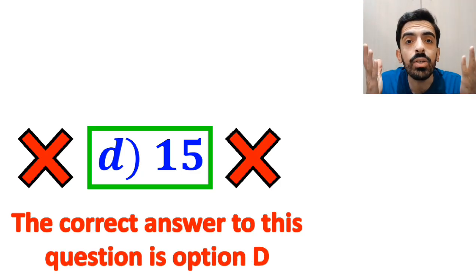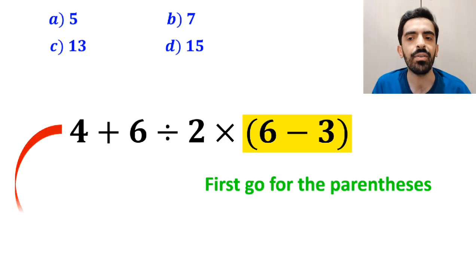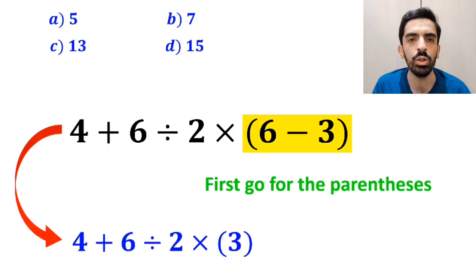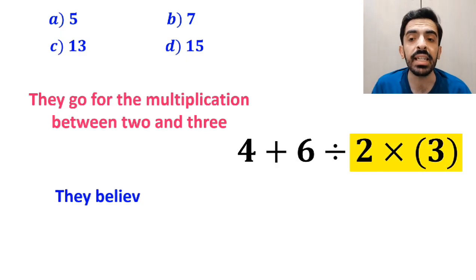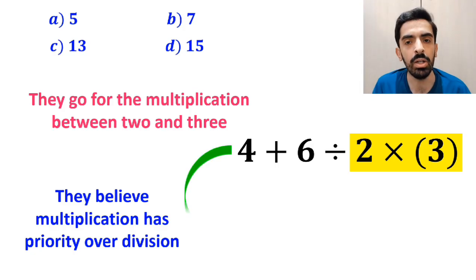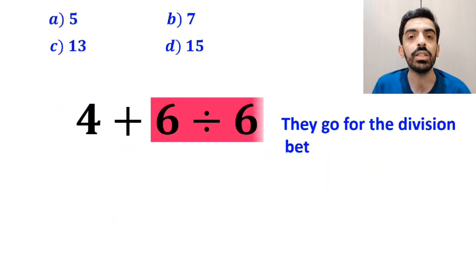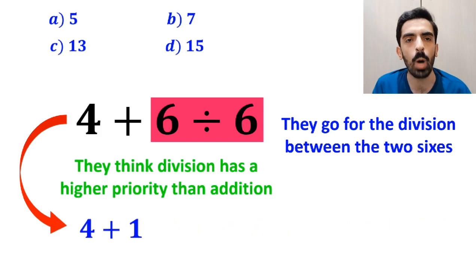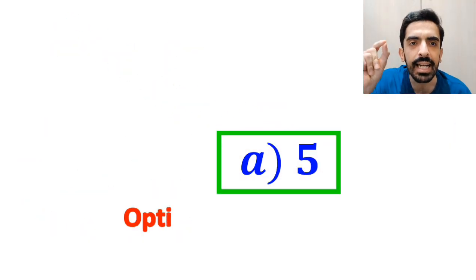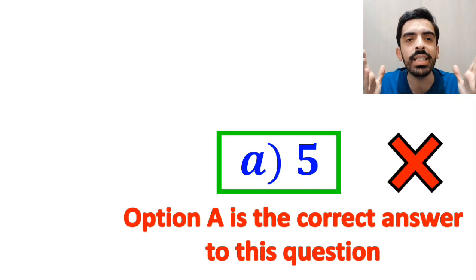However, it's not the correct answer to this question. Also, some other people when solving this question first go for the parenthesis, and write this expression as 4 plus 6 divided by 2 times 3. In the next step, they go for the multiplication between 2 and 3, because they believe multiplication has priority over division. So, this expression simplifies to 4 plus 6 divided by 6. Then, they go for the division between the two sixes, because they think division has a higher priority than addition. And they rewrite this expression as 4 plus 1, which ultimately gives them the answer 5. And immediately, they conclude that option A is the correct answer to this question. But we were tricked, and it's not the correct answer to this question.